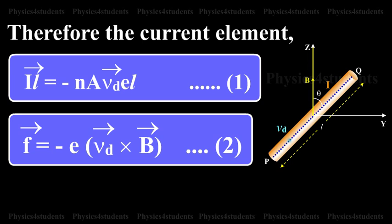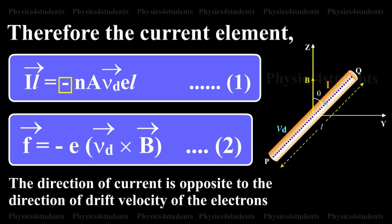Therefore, the current element vector IL = -nA(v_d)eL. This is equation 1. The negative sign indicates that the direction of the current is opposite to the direction of the drift velocity of the electrons.